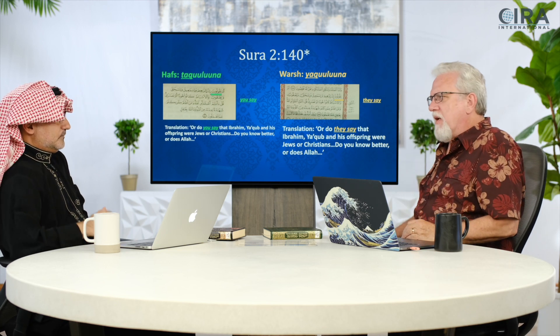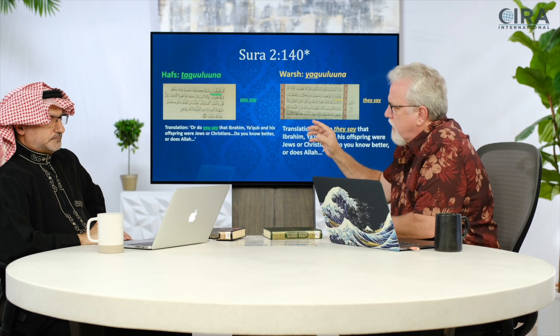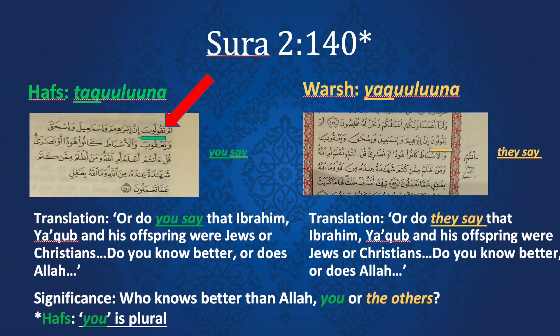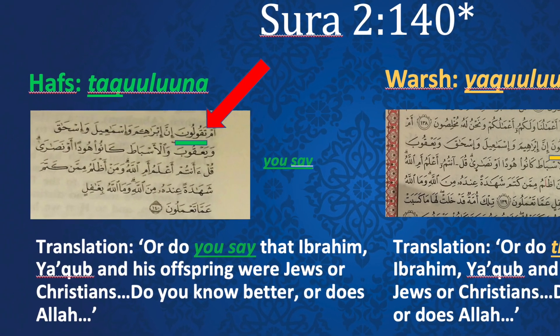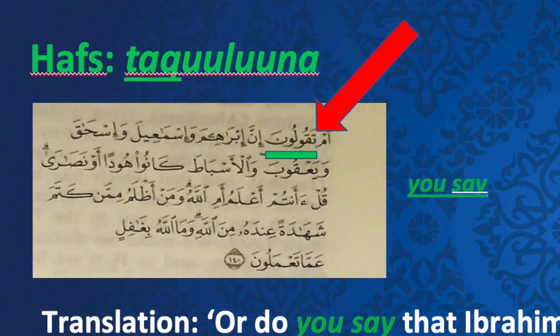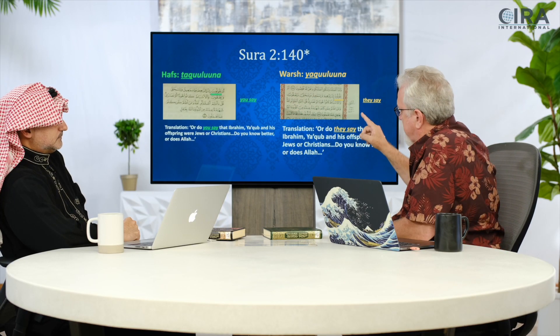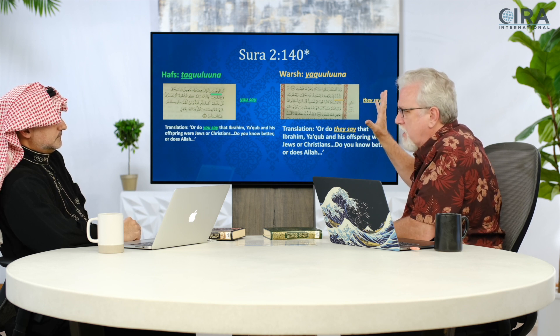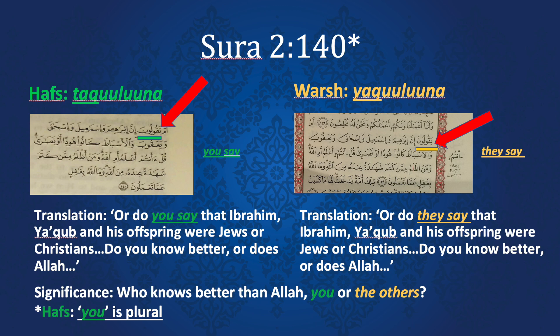Remember what we said at the very beginning: when the manuscripts were first written, there were no dots in them. So you take a letter — it's just a little smiley face shape. Hafs looked at that and put two dots above it, which makes it a T. There were only 16 letters in the 7th century, but by the time they look at this, there are 28 letters — 12 letters have been added just by putting dots above and below the line.